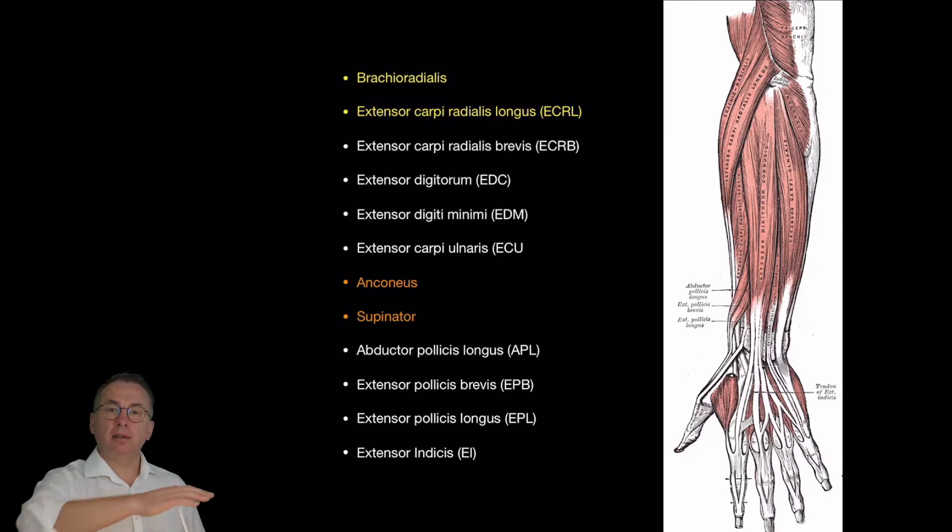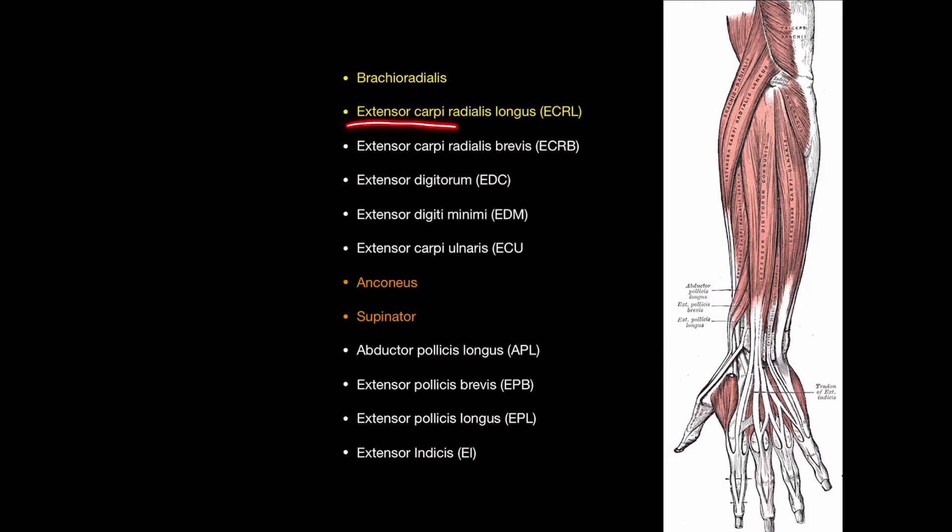All of the rest exert forces of extension on the wrist or the fingers or thumb. The ECRL or extensor carpi radialis longus originates up with brachioradialis on the lateral supracondylar ridge.